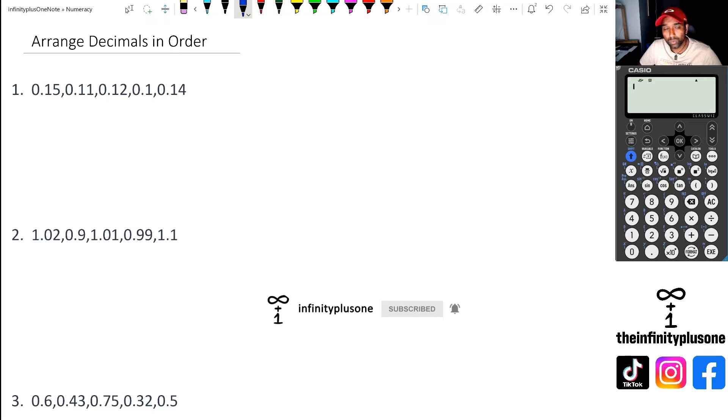One of the things about arranging decimals in order: personally what I like to do is write them in a vertical form so I can actually see where the numbers are and work from there. I like to see the place value of the numbers. For question one we're going to...